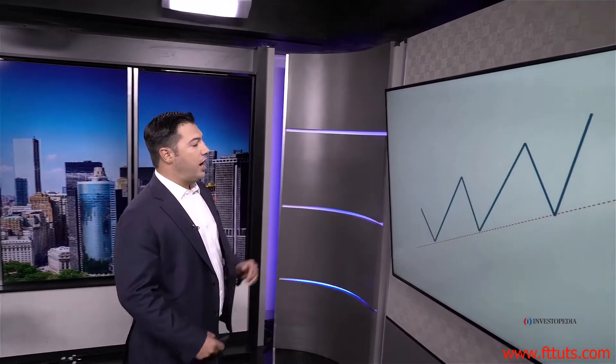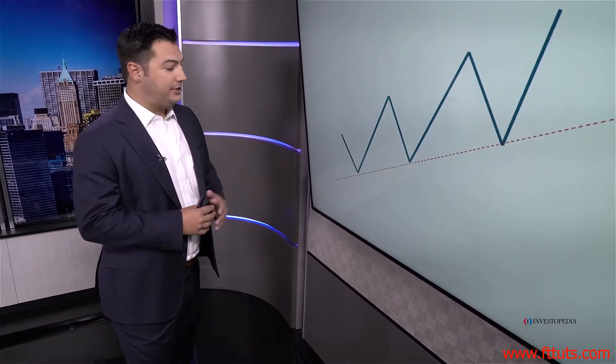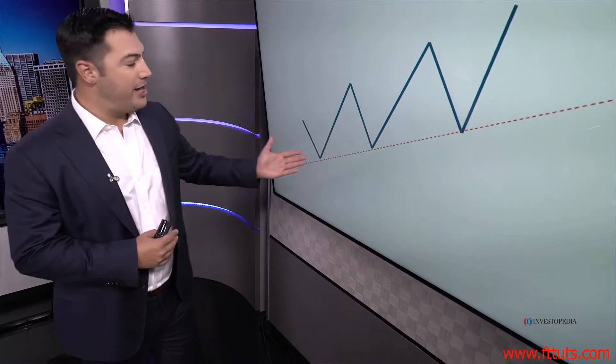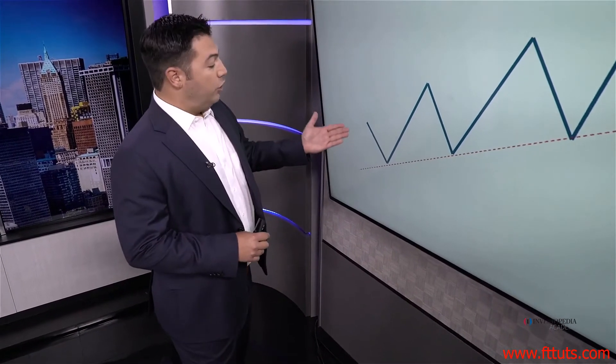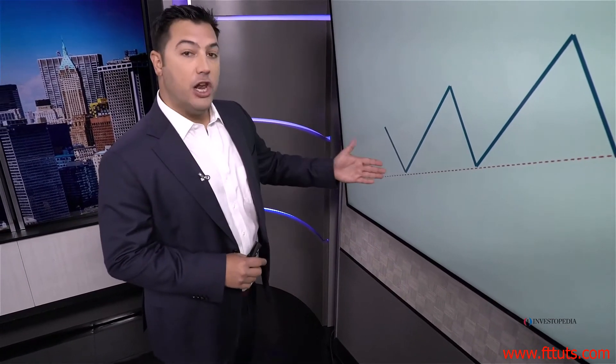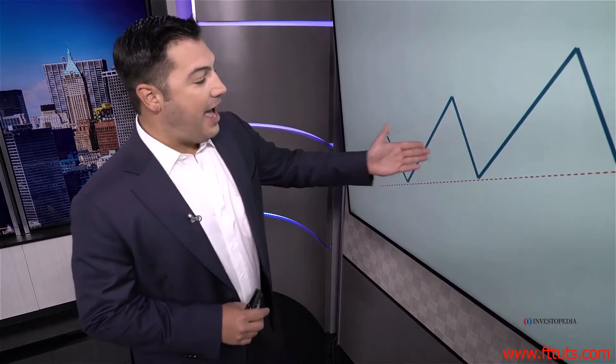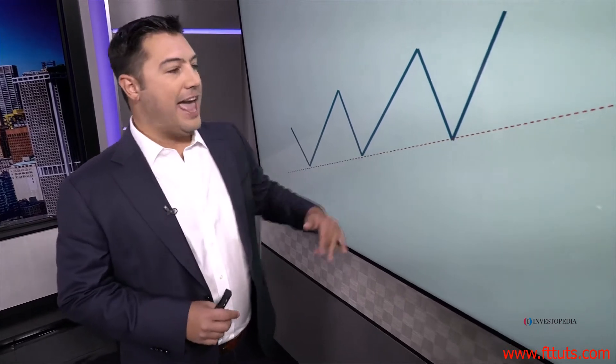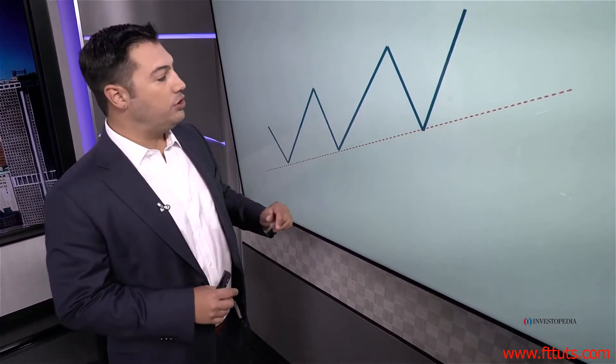One way we can do that is using trend lines. The blue line represents price and the red line is the uptrend line we are drawing on the chart. All we need to draw a trend line is two points of contact. In an uptrend, the trend line connects the troughs in the market — the ends of declines, the pivot lows — and after two consecutive pivot lows, the uptrend line is drawn.